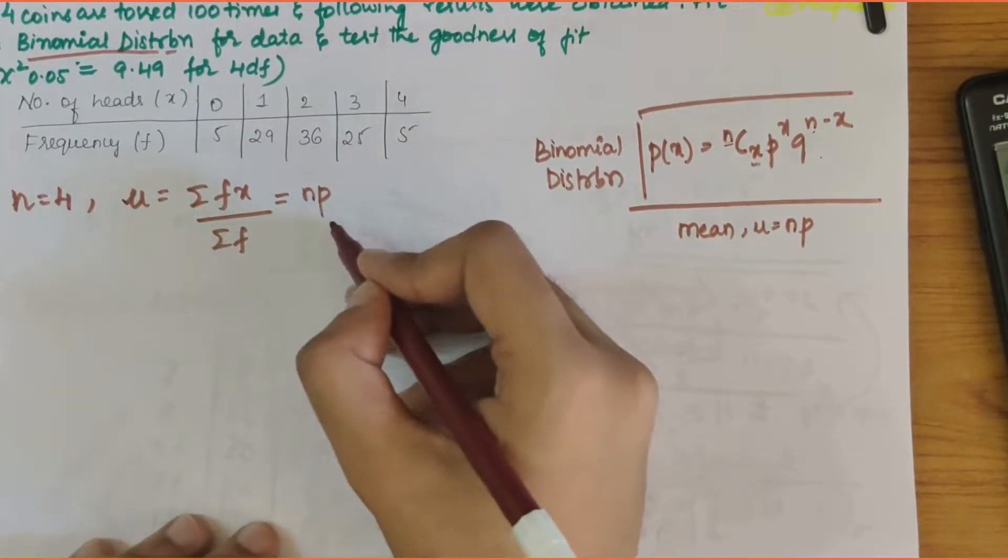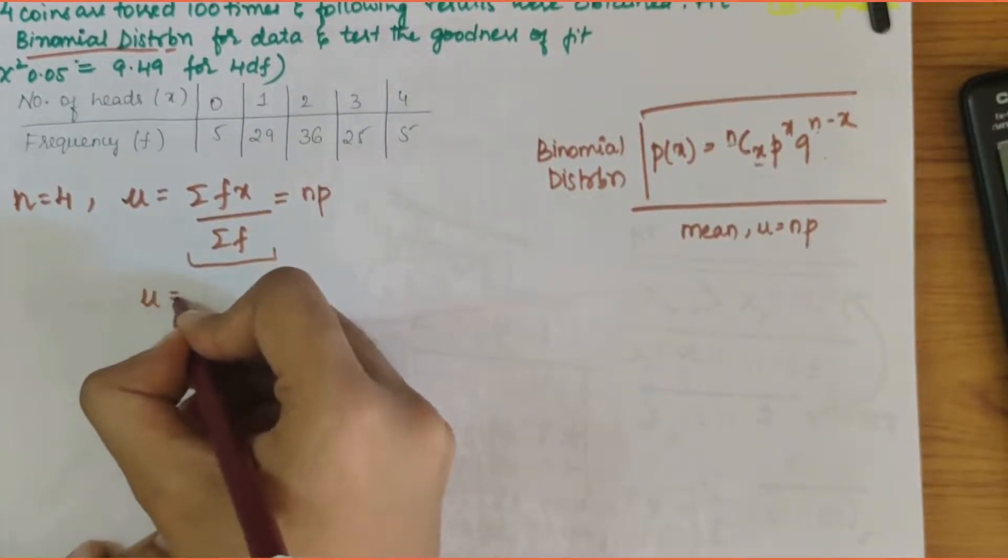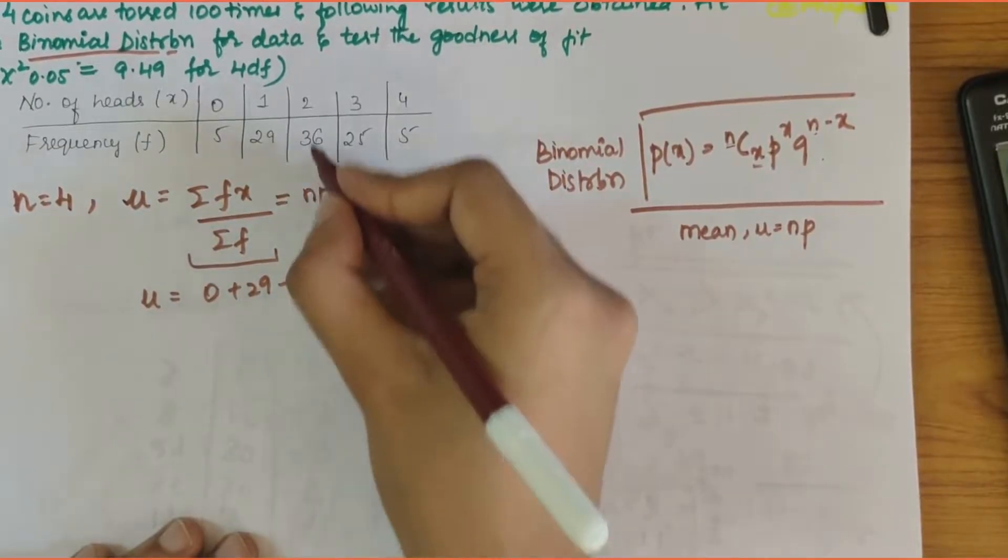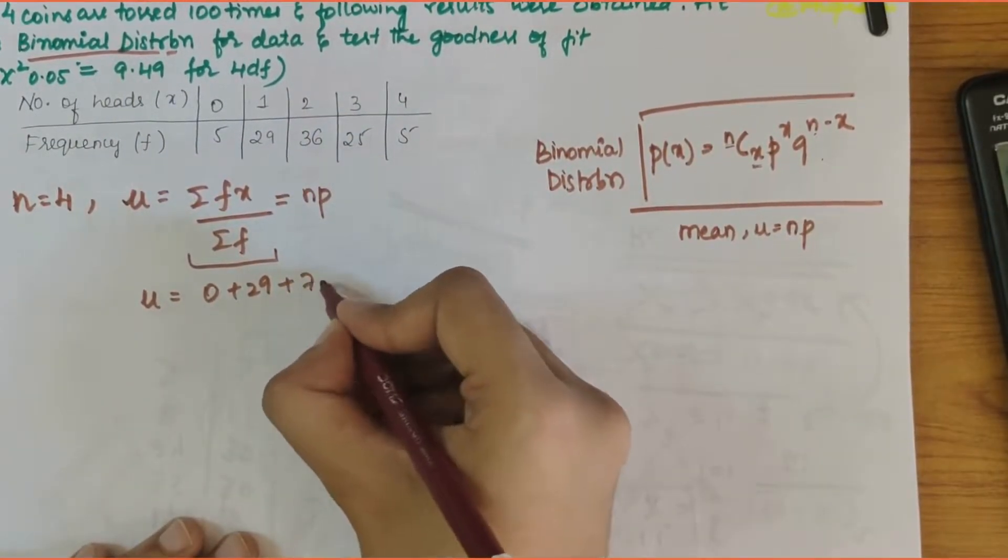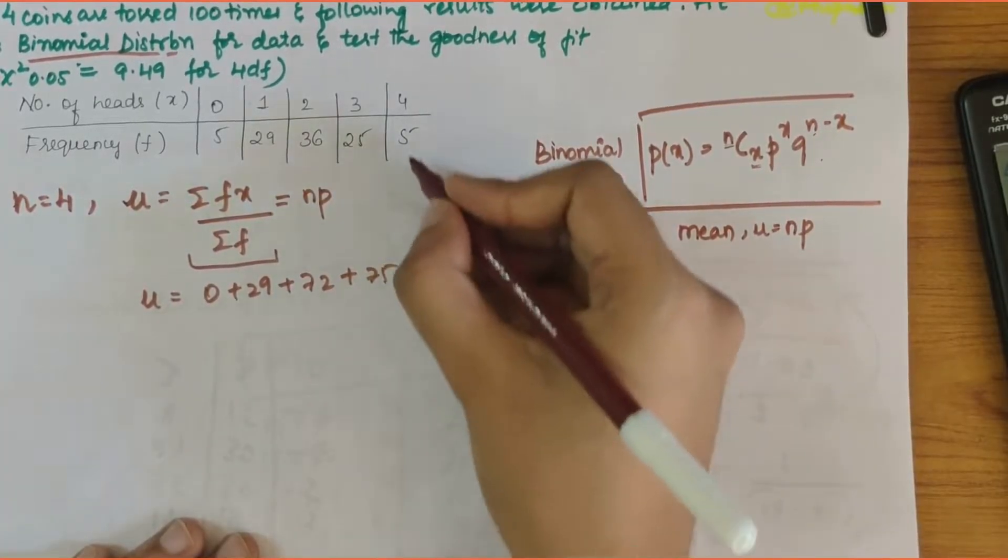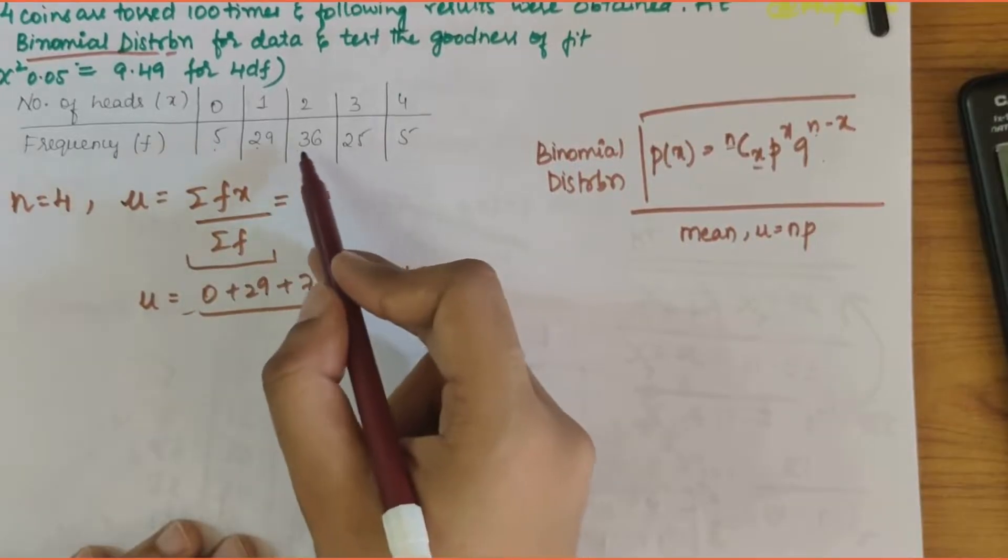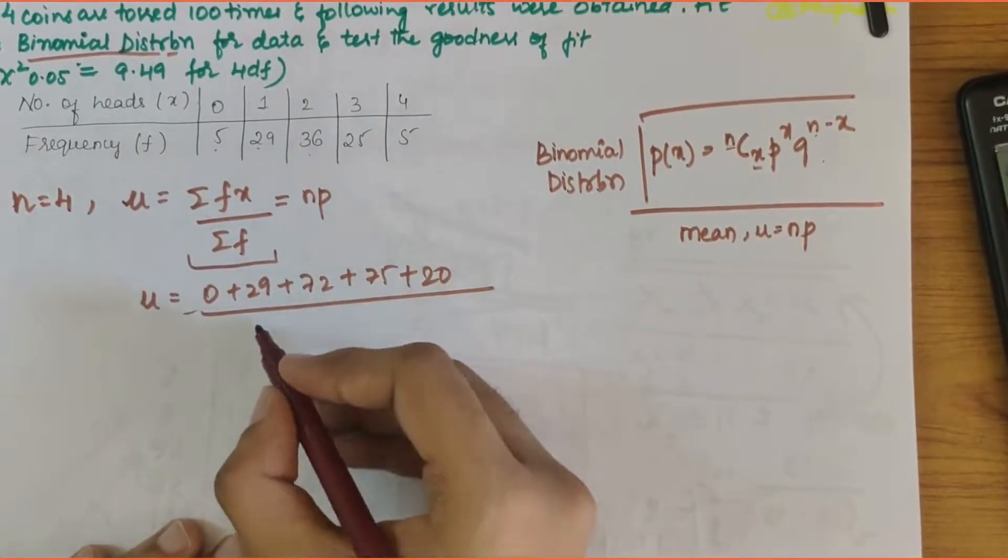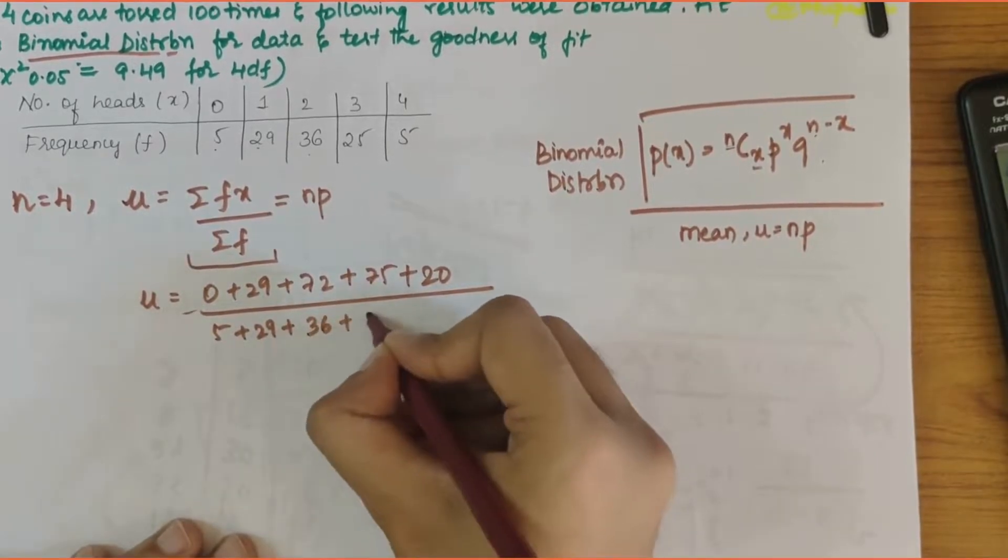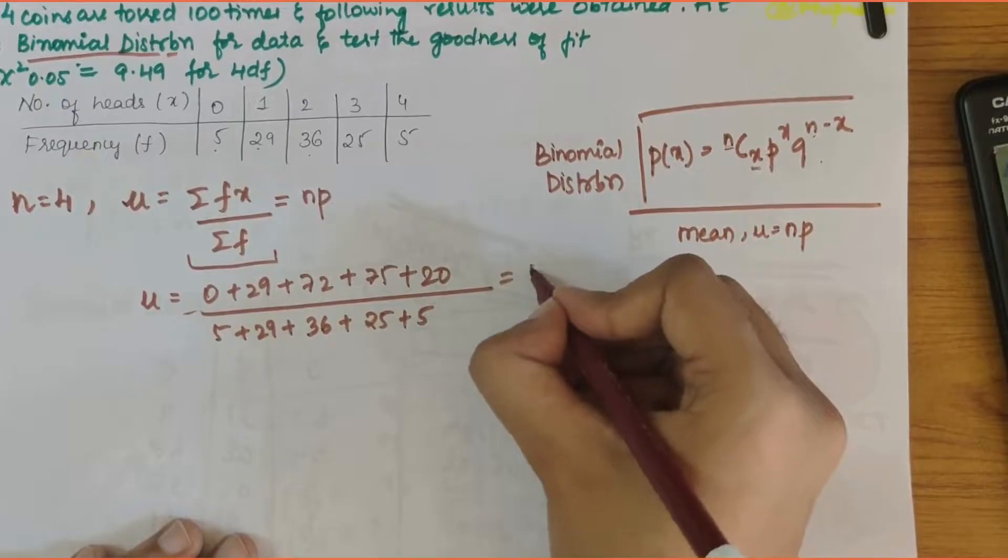So solving this part, we write mu is equal to 0 plus 29 plus 2 times 36 which is 72 plus 3 times 25 which is 75 plus 4 times 5 which is 20, divided by 5 plus 29 plus 36 plus 25 plus 5. If you solve this you get 1.9.